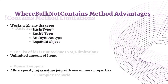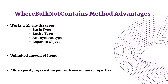To solve those limitations, the Where Bulk Not Contains method has many advantages. It allows using any list type like Basic Type, Entity Type, Anonymous Type, or ExpandoObject. It allows for an unlimited amount of items, and you can specify a custom join with one or many properties.